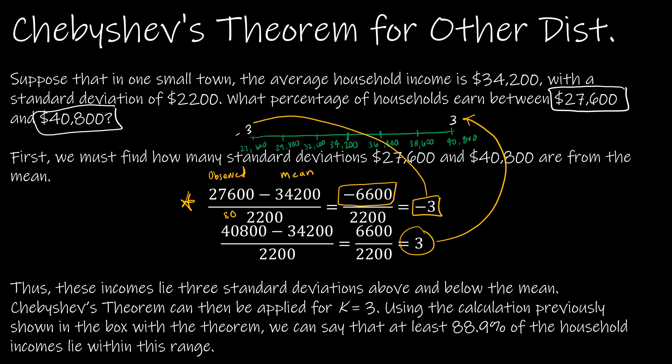Now, what does that mean? Well, Chebyshev's theorem says we can use K equals 3, which says 1 - 1/3², which is 1 - 1/9 or 8/9, which was about 88.9% of the household incomes lie within that range. So 88% of the incomes in this small town lie between $27,600 and $40,800.